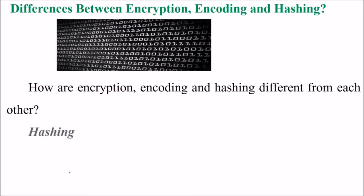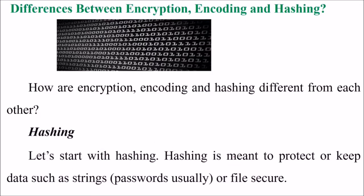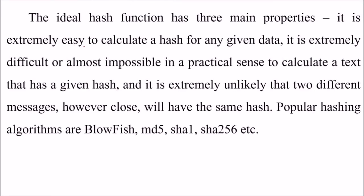Let us start with hashing. Hashing is meant to protect or keep data such as strings — normally passwords or files — secure. The ideal hash function has three main properties: it is extremely easy to calculate a hash for any given data; it is extremely difficult or almost impossible in a practical sense to calculate a text that has a given hash; and it is extremely unlikely that two different messages, however close, will have the same hash.